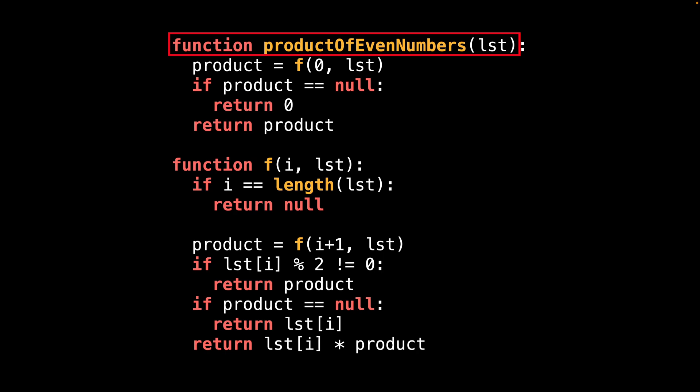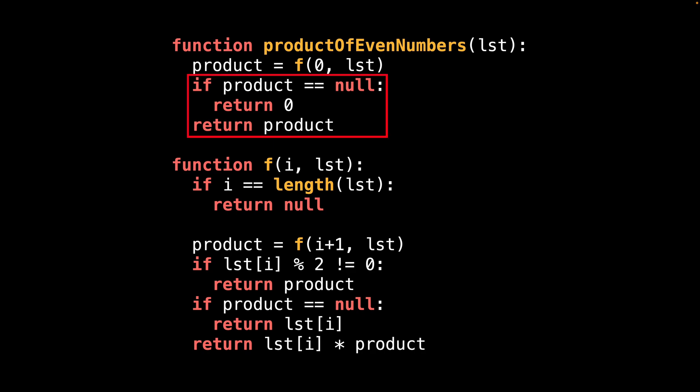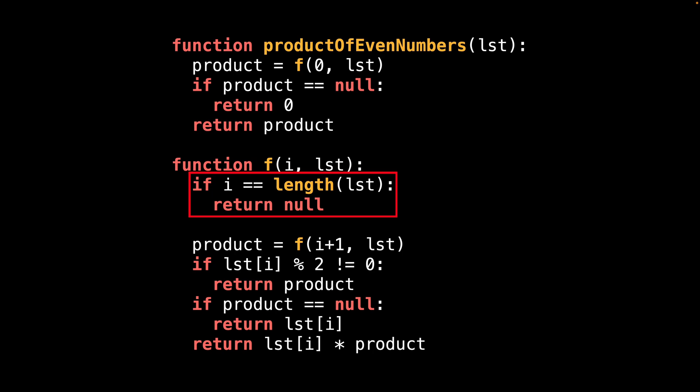Let's look at the product_of_even_numbers function. We start by calling the internal function f to calculate the product of all even numbers, supplying a reference to the list and an initial starting index of zero. Once the function has calculated the final product, we check to see if the answer is null. If it is, it means either the list was empty or all the numbers in the list were odd, so we return zero in both of those cases. Otherwise we return the product. Moving on to function f: this is the function that actually calculates the product by maintaining a running product of all the numbers multiplied together so far. Our base case is when we've reached the end of the list, at which point we return null to indicate there is no product yet.